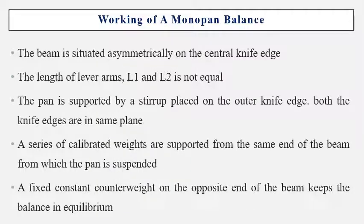Working of the mono-pan balance: the beam is placed asymmetrically on the central knife edge. The length of lever arms L1 and L2 are not equal — that is why both arms are asymmetrical, not symmetrical. The pan is supported by stirrups placed on the outer knife edge, so both knife edges are on the same plane. A series of calibrated weights are supported from the same end of the beam from which the pan is suspended.